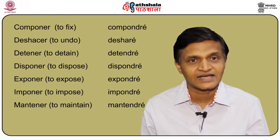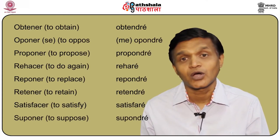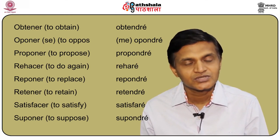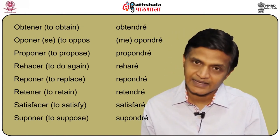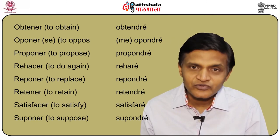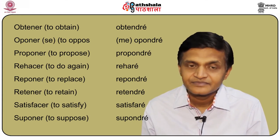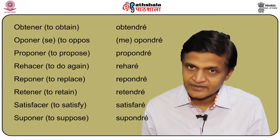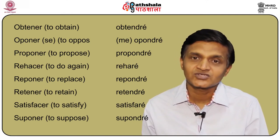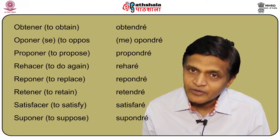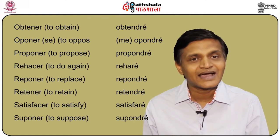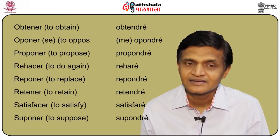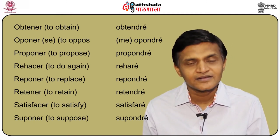Continuing with more compound verb examples: obtener — to obtain — becomes obtendré; oponerse — to oppose — becomes me opondré; proponer — to propose — becomes propondré; rehacer — to do again — becomes reharé; reponer becomes repondré; retener becomes retendré; satisfacer becomes satisfaré; and suponer becomes supondré.